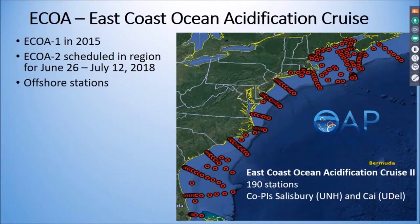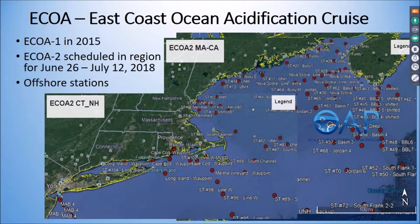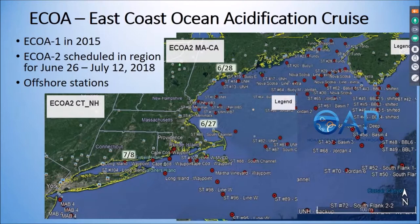We do have an East Coast Ocean Acidification cruise coming up this summer — one of those purple lines on the previous graph was the earlier ECOA cruise from 2015. We have another one scheduled for June 26th to around July 12th or 15th. These are mostly offshore stations. Around June 27th they'll be around Cape Cod and New Hampshire stations, going up the coast of Maine around the 28th, then around Long Island Sound, making a circle around the Gulf of Maine and coming back in July to the Long Island Sound area.